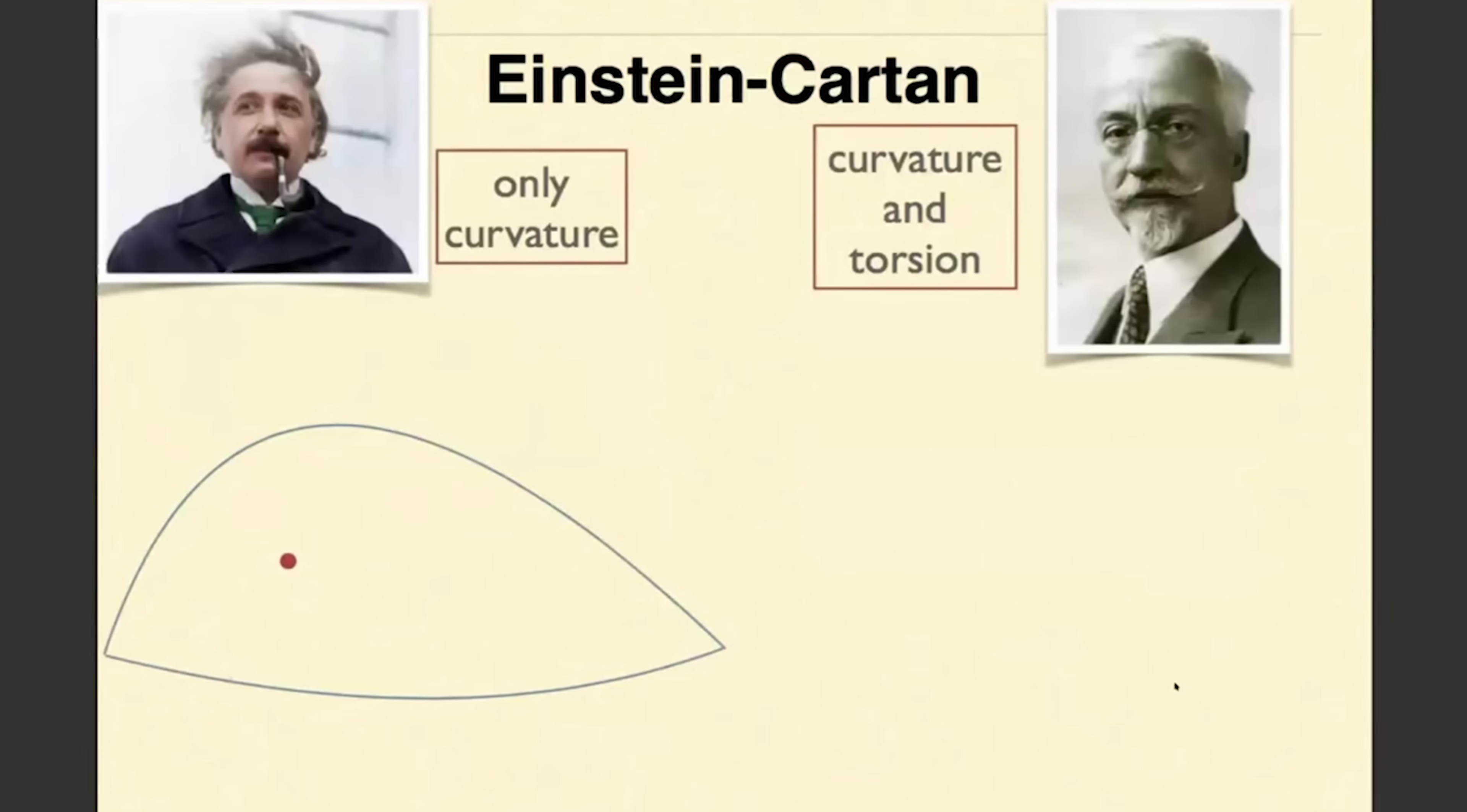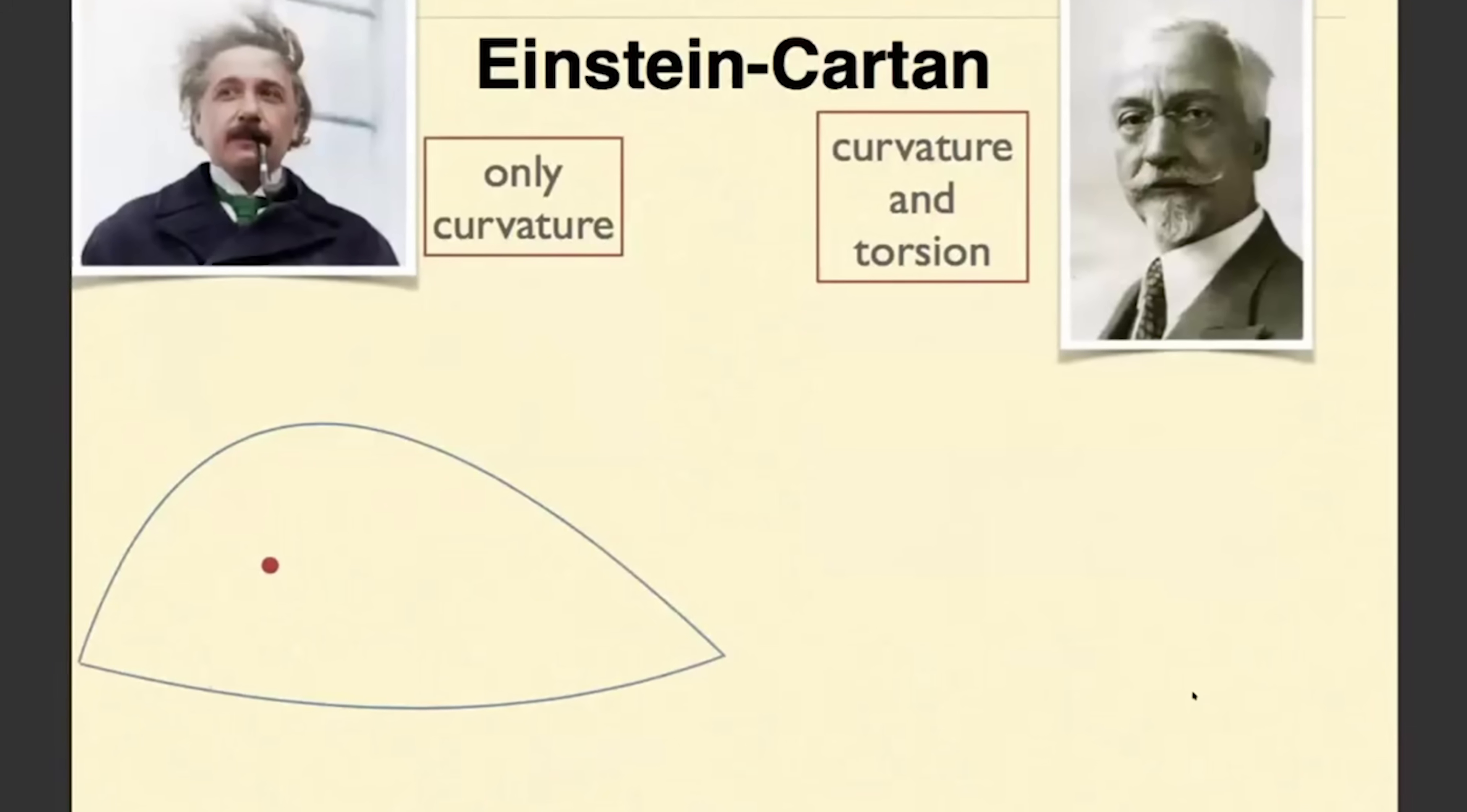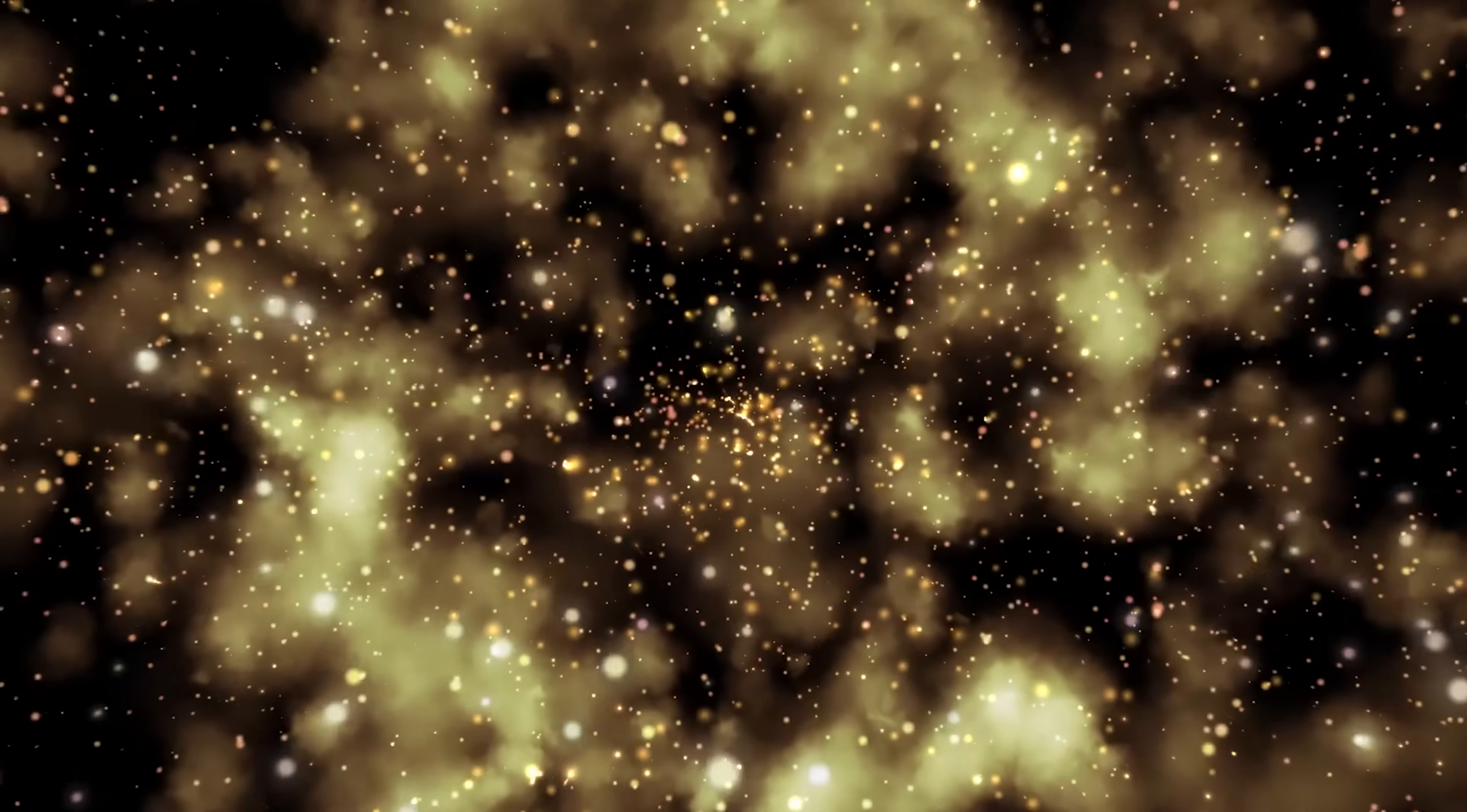Some extensions of general relativity, such as Einstein-Cartan theory, introduce a property called torsion, linked to particle spin. At extreme densities, torsion could generate a repulsive force, preventing singularities from forming. Instead of infinite collapse, a black hole's core could rebound in a big bounce, triggering rapid expansion. That expansion might look exactly like the Big Bang.